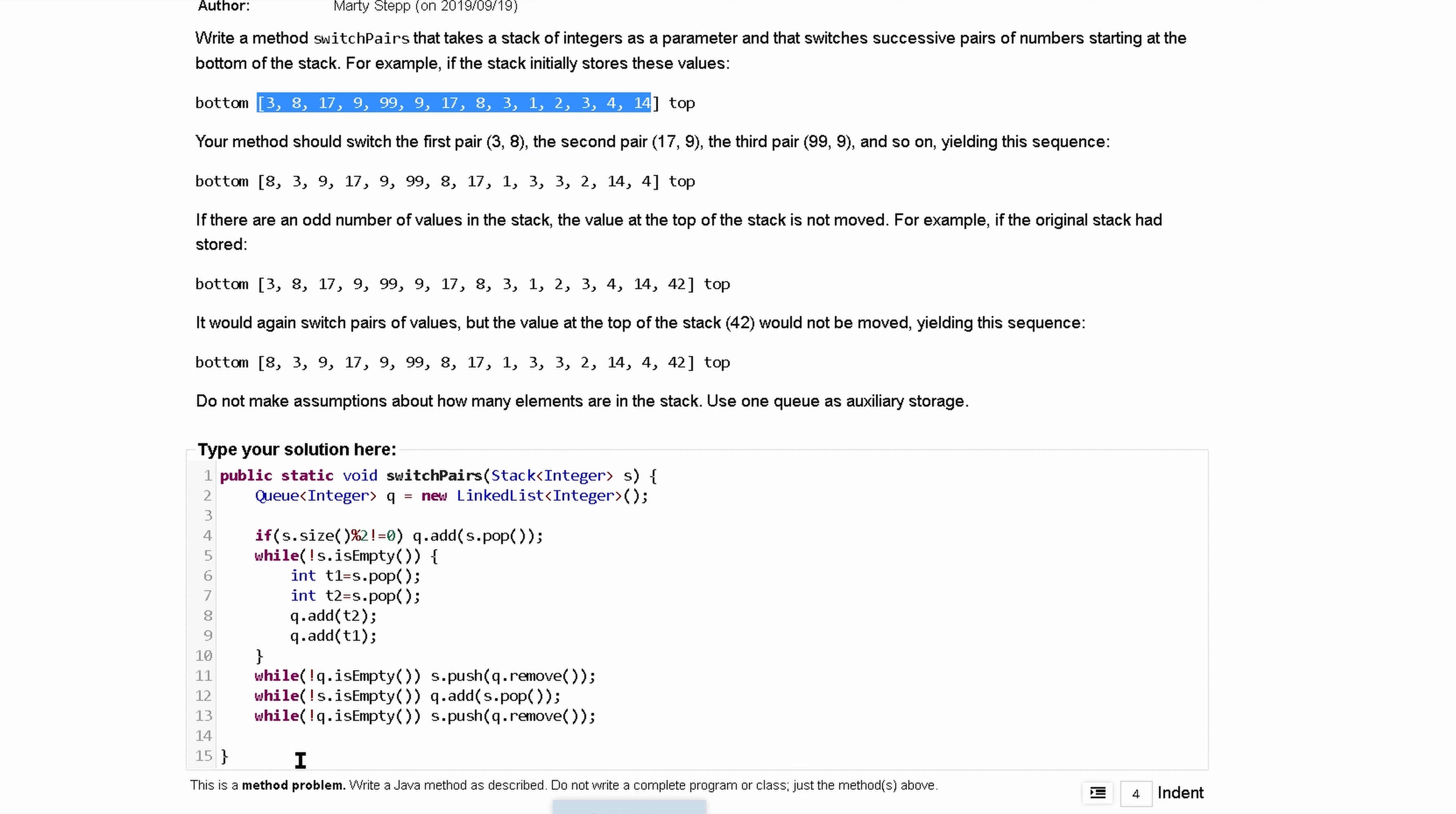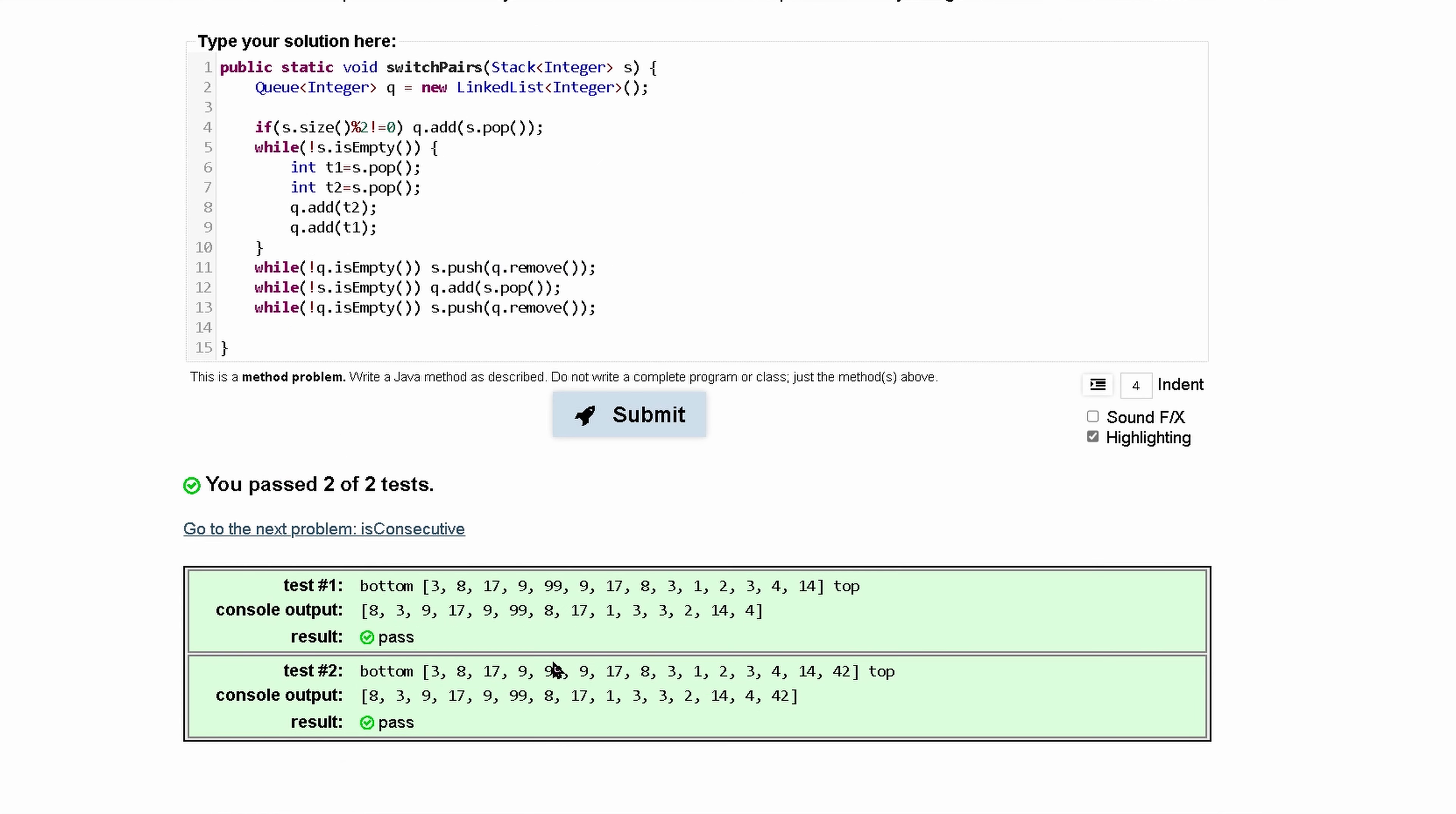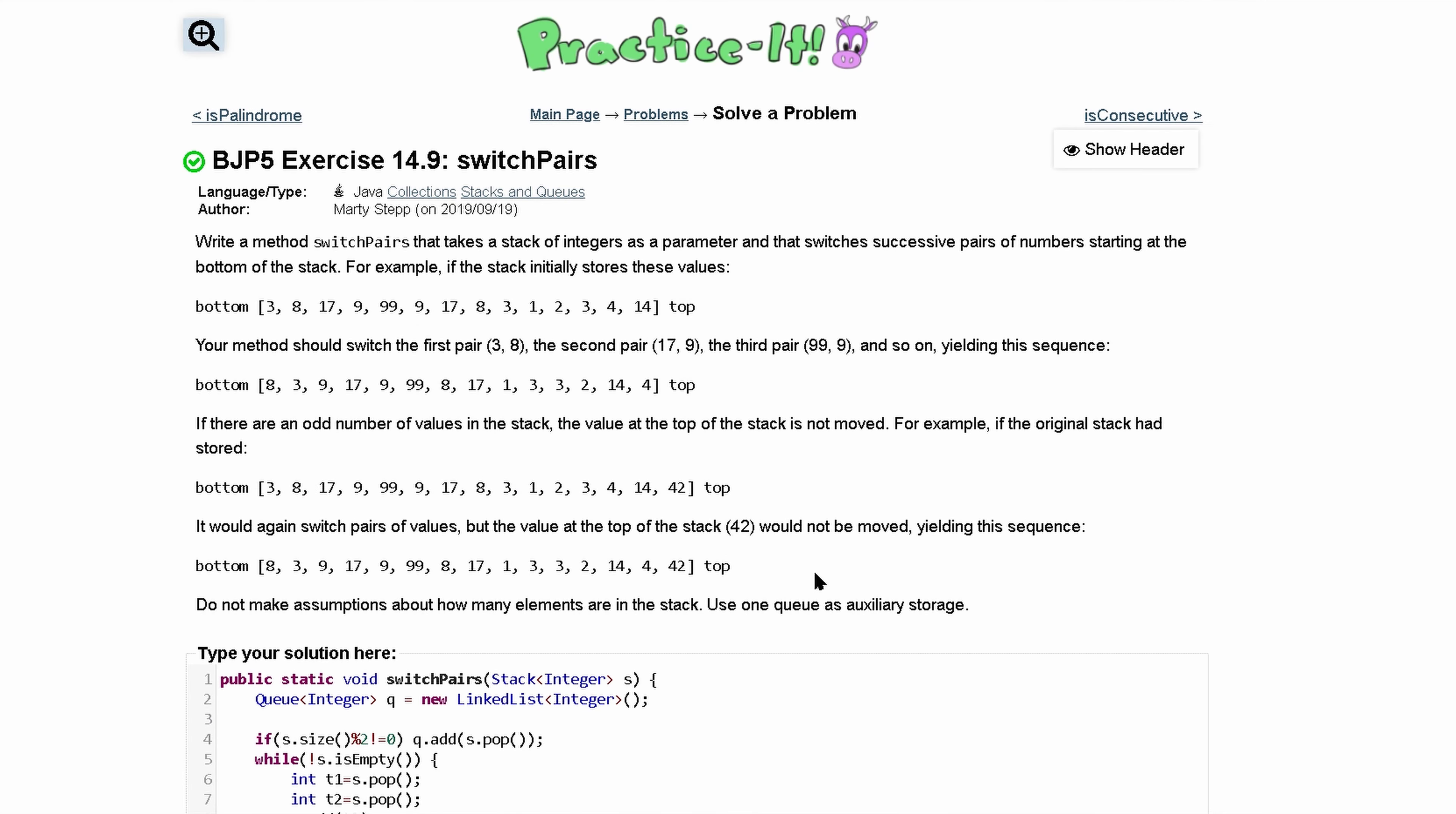So before we can return, we need to switch this. So that's where we're going to add it back to our queue with this q.add. And then we finish it off pushing it back to our stack right here. So submitting this, I like this way a little bit easier again, but you can decide which works best for you. As long as you understand that passes two out of two tests, and that's how we do 14.9 switch pairs.